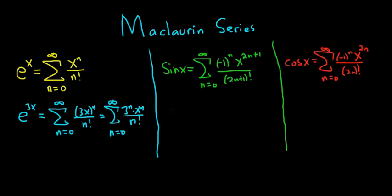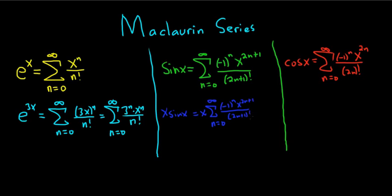For example, say you had to find the Maclaurin series for x times sine of x. All you would do is multiply the sine series by x, so you'd have x times the sum as n goes from zero to infinity of negative 1 to the n times x to the 2n plus 1, over 2n plus 1 factorial. Then distribute the x — since x is x to the 1, you add the exponents — giving the infinite sum of negative 1 to the n times x to the 2n plus 2, over 2n plus 1 factorial.